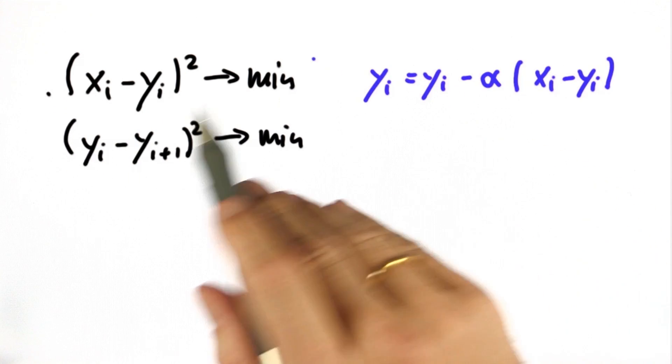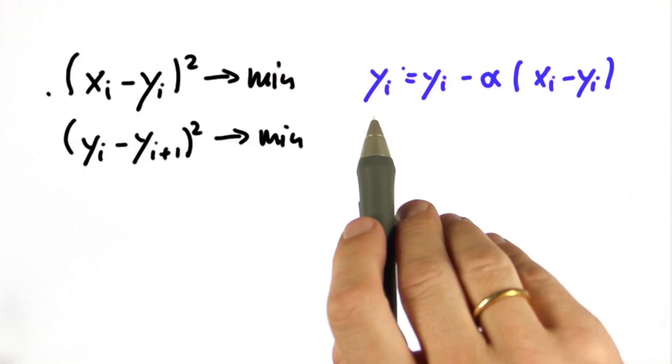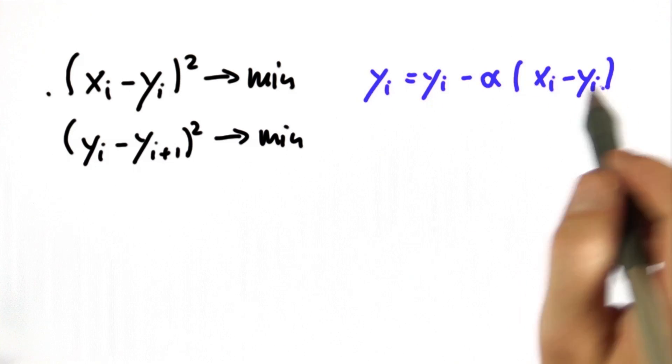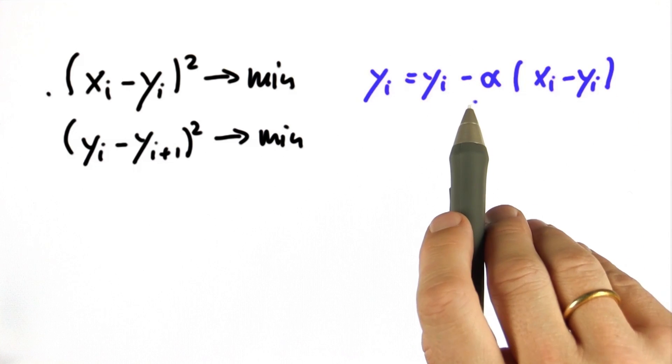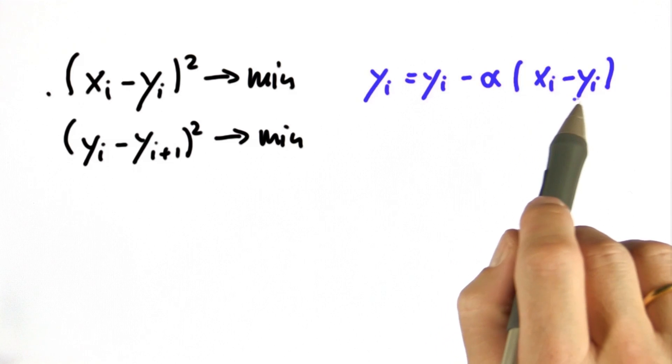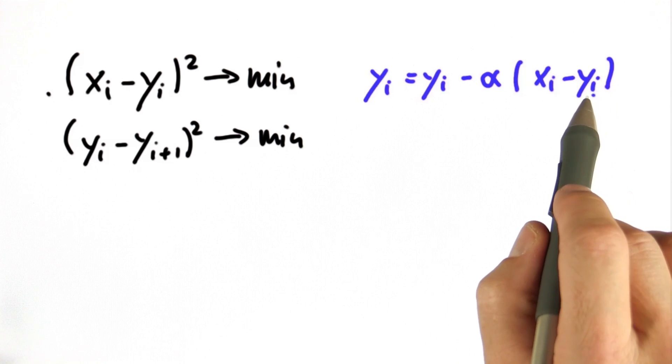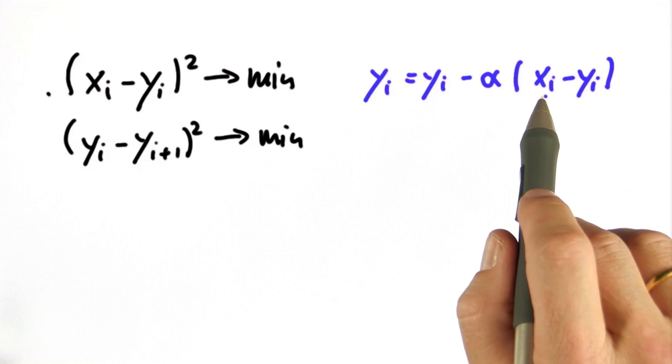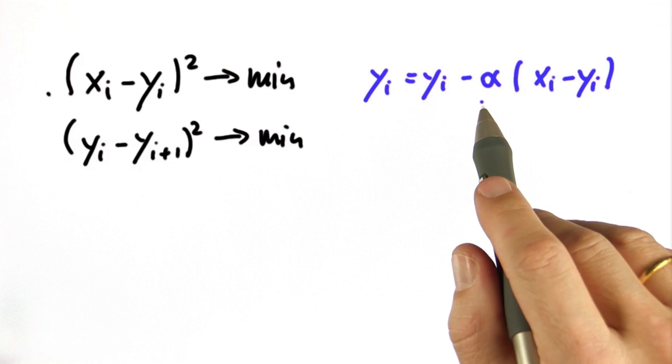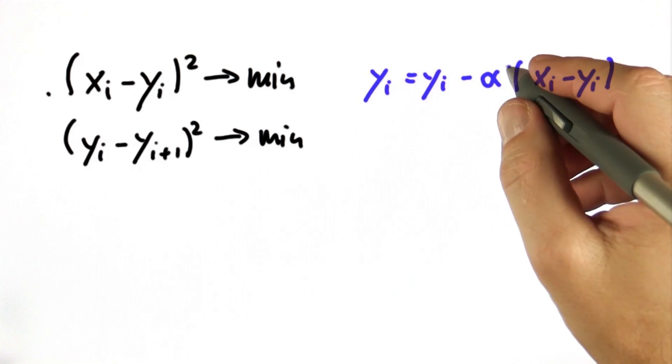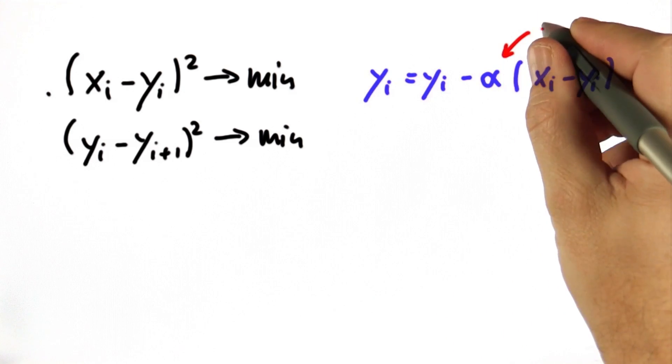So, here's the expression for the first objective. When we iterate, we assign to yi recursively the old yi, but we subtract a term that's proportional to the deviation of yi to xi, weighted by a weighting function alpha, that's not exactly the same alpha as before, and we set this alpha over here to 0.5.